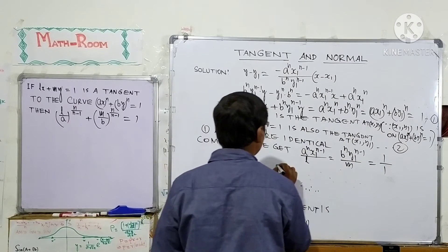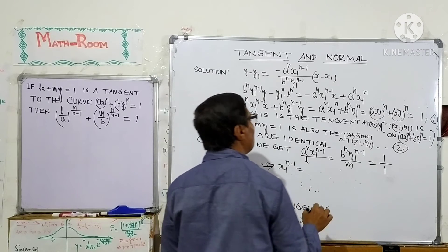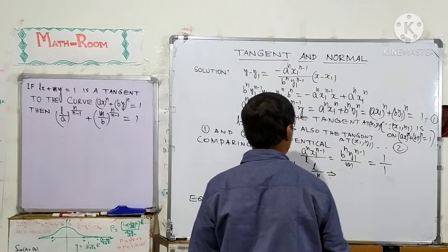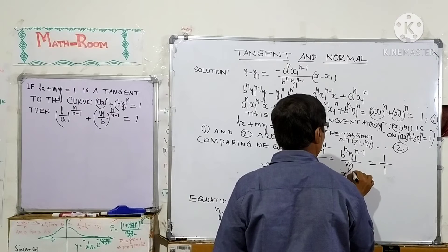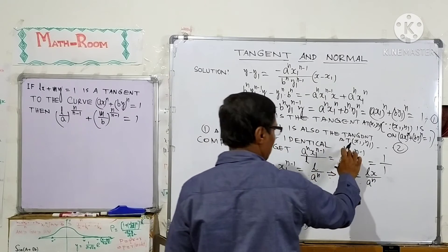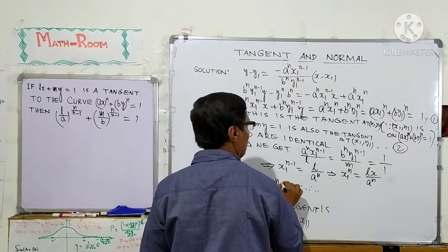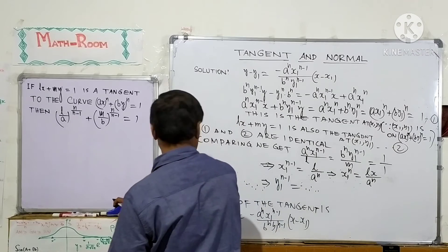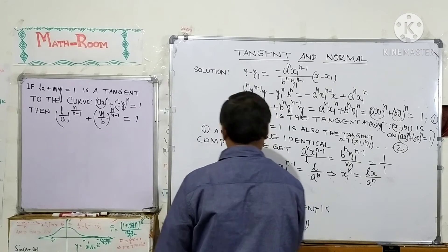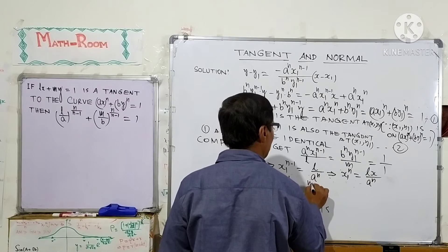From this comparison, x1 to the power n minus 1 equals L over An. So x1 to the power n equals L·x1 over An. Similarly, from the last two ratios, Bn·y1 to the power n minus 1 over m equals 1, giving y1 to the power n minus 1 equals m over Bn, and therefore y1 to the power n equals m over Bn.